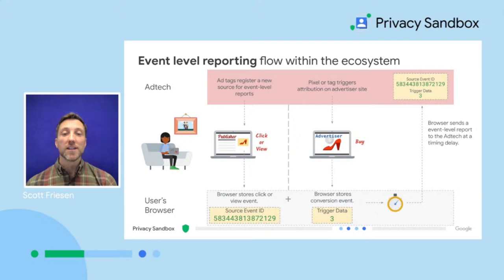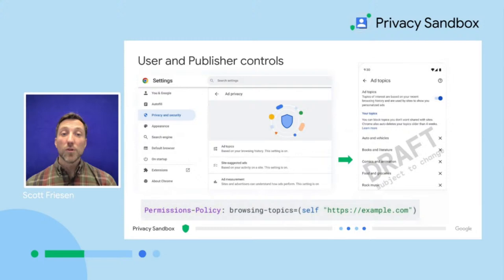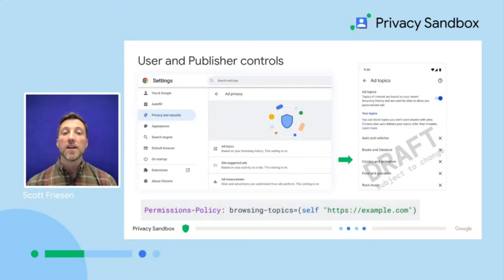Hopefully, you now have a better understanding of how Privacy Sandbox APIs work to enable relevant ads and to measure results. For each of the new relevance and measurement technologies, we've also rolled out new ad privacy controls in Chrome that allow people to manage how the Privacy Sandbox technologies may be used to deliver the ads they see. These controls allow users to tailor their experience by customizing what ad topics they're interested in, what relevance and measurement APIs they want enabled, and more.